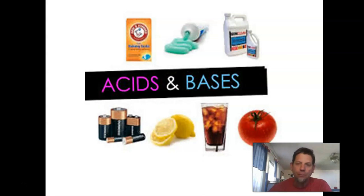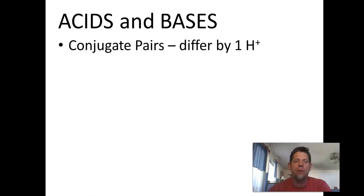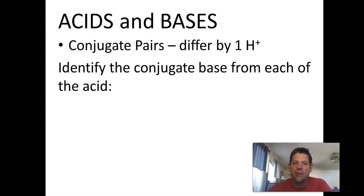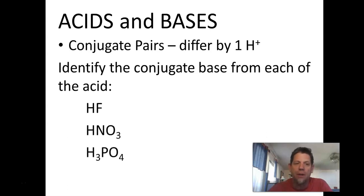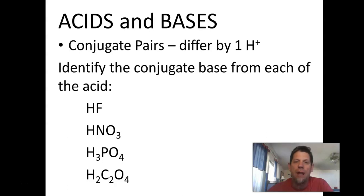First thing to remember is that there are these things called conjugate pairs. We talked a little bit about that in the last section. Conjugate pairs differ by one hydrogen ion — one H⁺. Literally the only difference between them is one H⁺. So if we were to identify some from a given acid — here are four acids: hydrofluoric acid, nitric acid, phosphoric acid, and oxalic acid — what is the conjugate base that goes with each?